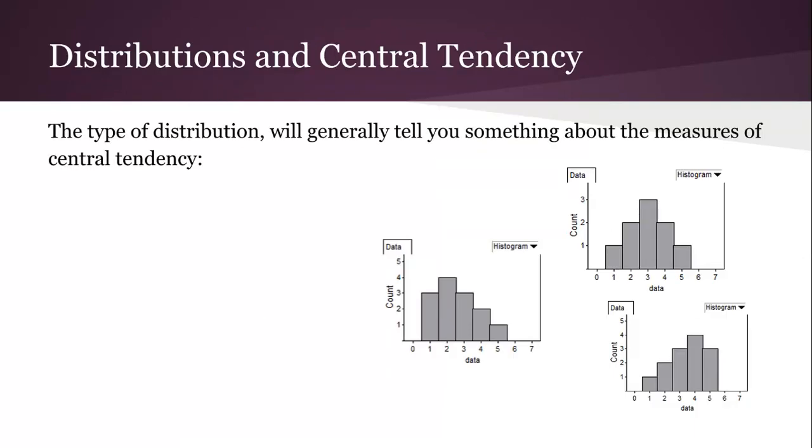Because the tail is on the left. Generally you'll learn something about measures of central tendency from the skew type. You can also use measures of central tendency to help you decide what type of distribution it is in accompaniment with the histogram.